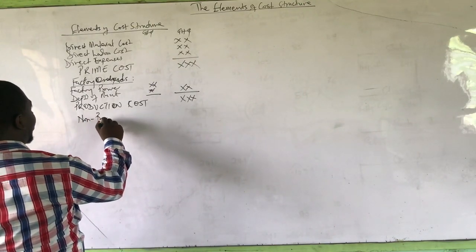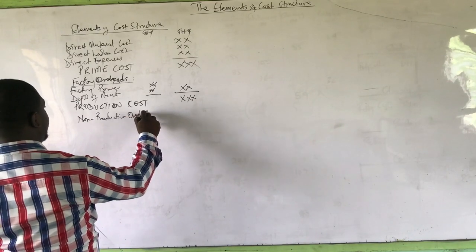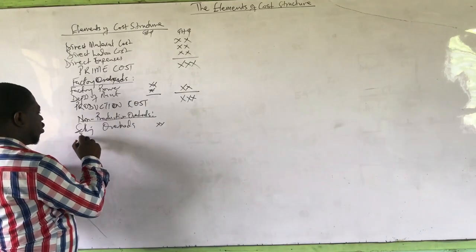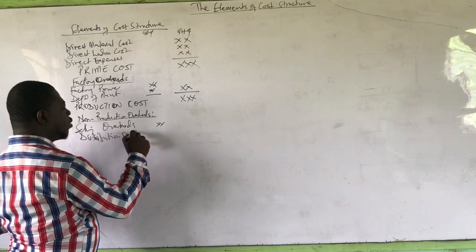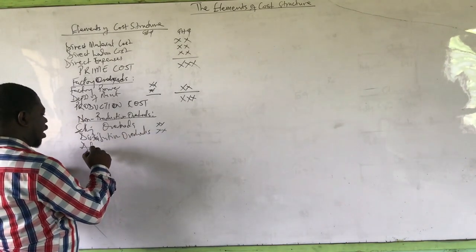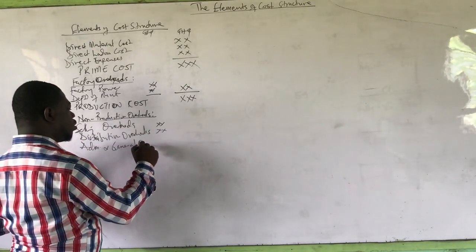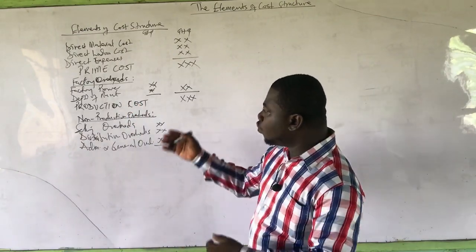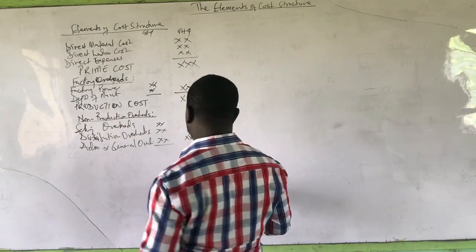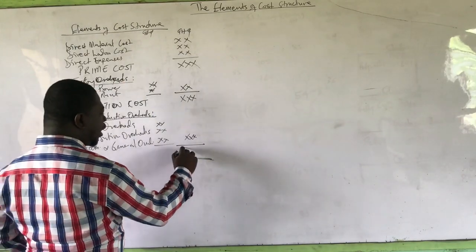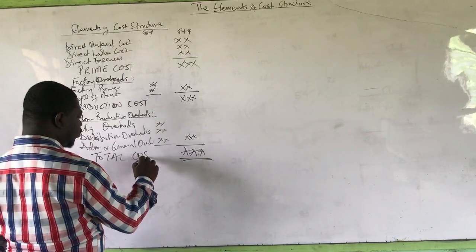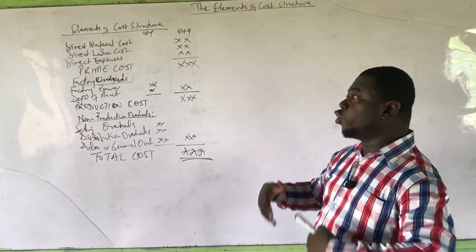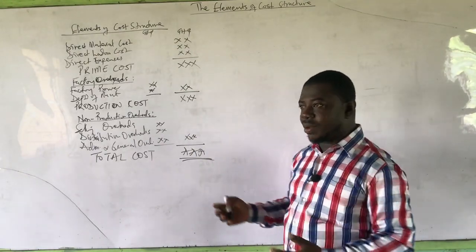We still have non-production overheads to talk about. These include selling overheads, distribution overheads — sometimes combined as selling and distribution — and administrative and general overheads. All other overheads can be categorised under these headings. When we add the total non-factory overheads to the production cost, we get our final figure, which we call total cost. This is the element of cost structure format, and we are going to use it for many topics in cost accounting, including job costing, contract costing, and process costing.